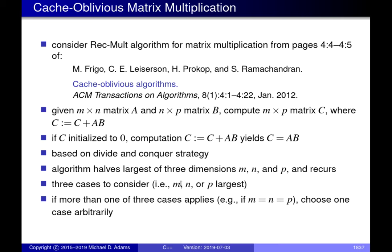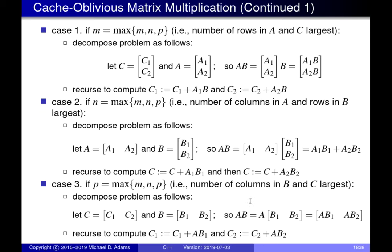M might be largest, N might be largest, or P might be largest, and we handle each case. In some cases there may be a tie — for example, if the matrices are all square, then M equals N equals P. When there's a tie, you can handle it with any of the three cases; you just flip a coin to break the tie. It doesn't particularly matter which one you choose.